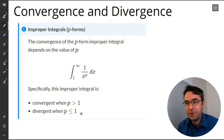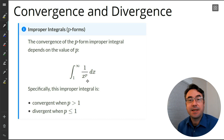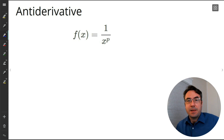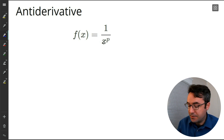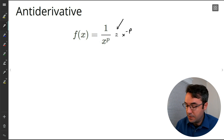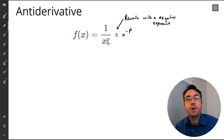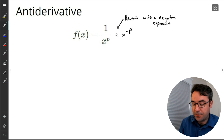You can see there are a few different cases here for what the value of P is, and that has to do with how we actually find the antiderivative of this function. So let's look at the antiderivative of the function 1 over x to the power P. For the most part, we would be able to integrate these by rewriting it as x to the power negative P — using a negative exponent — and then just using the power rule. But that doesn't always work.